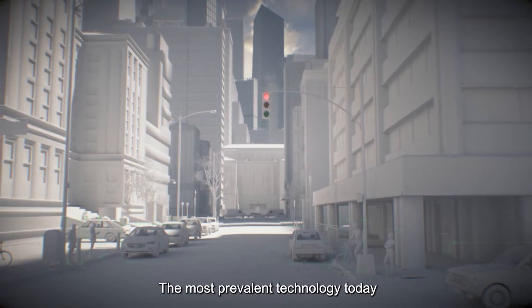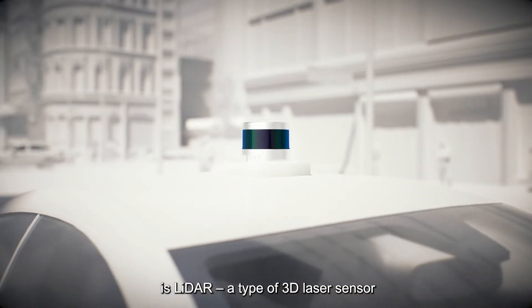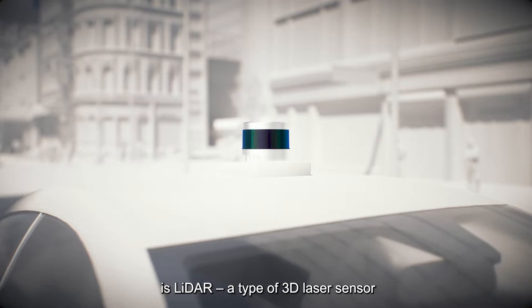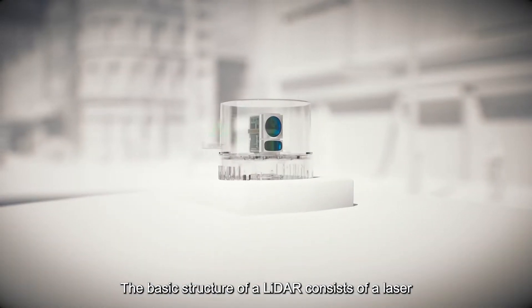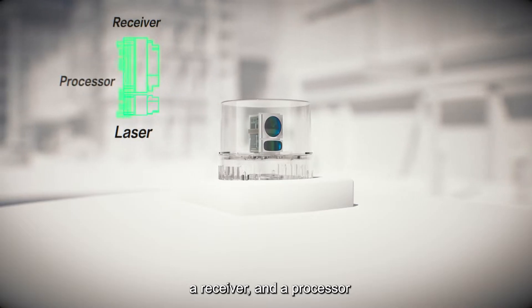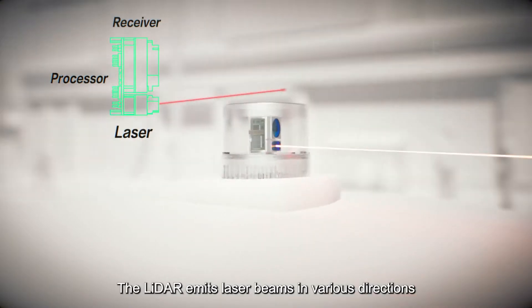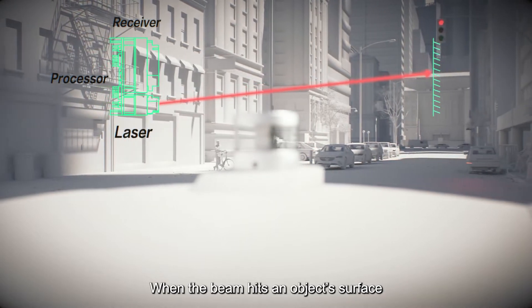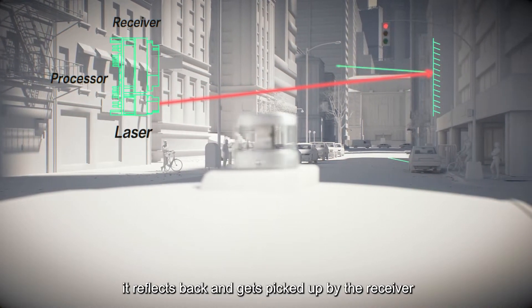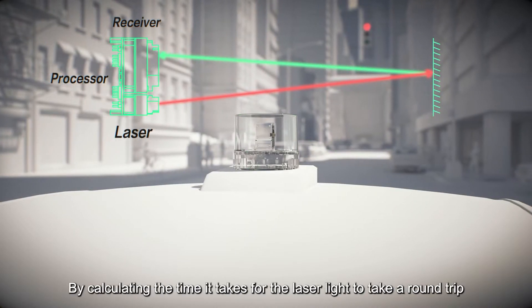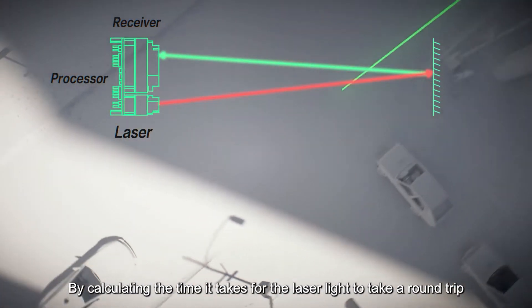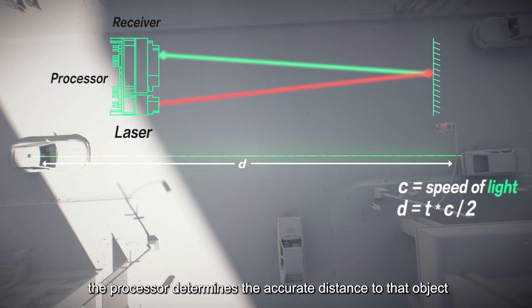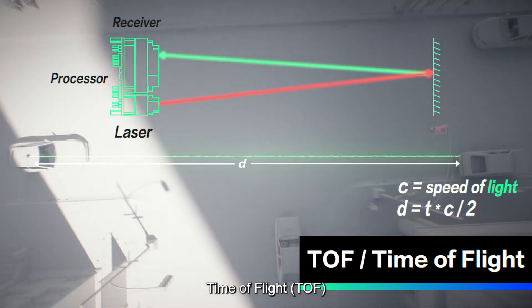The most prevalent technology today is LiDAR, a type of 3D laser sensor. The basic structure of a LiDAR consists of a laser, a receiver, and a processor. The LiDAR emits laser beams in various directions. When the beam hits an object's surface, it reflects back and gets picked up by the receiver. By calculating the time it takes for the laser light to take a round trip, the processor determines the accurate distance to that object. This technique is called Time of Flight.